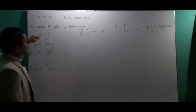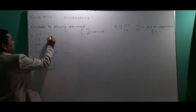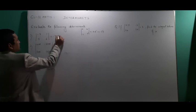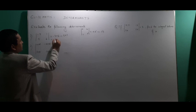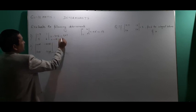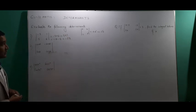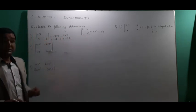Now we'll use the same formula to evaluate this one. This is a very simple numerical example: -3 multiplied by 6 minus 5 multiplied by 1, which gives us -18 minus 5, equals -23.